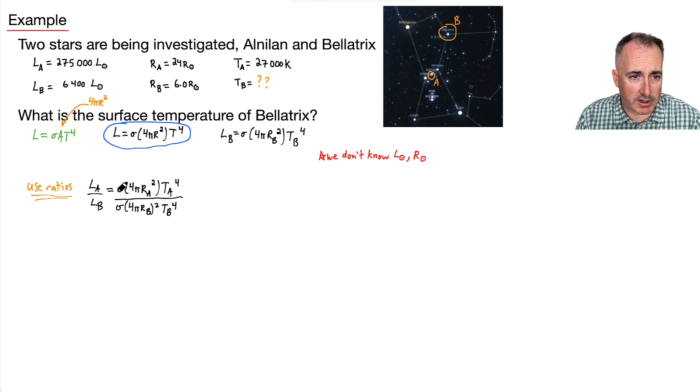All that divided by sigma times four times pi times RB squared times TB to the fourth. Does anything cancel out? Thankfully, this does. The fours and the pi's do.